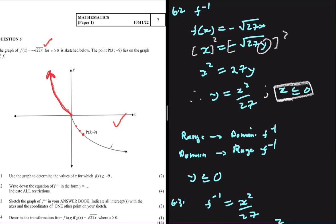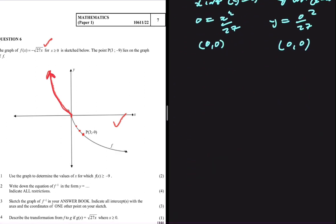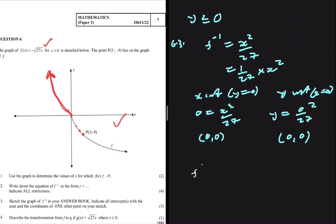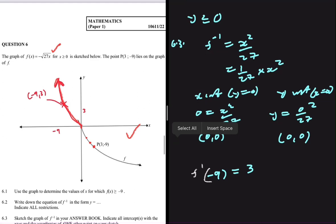What is left is for us to include one other point. So you just take a point and you substitute it on f inverse. If we substitute minus 9, the answer we're going to get is going to be positive 3. So we have a point somewhere here of minus 9 and positive 3. And just like that, I think we are done with 6.3.